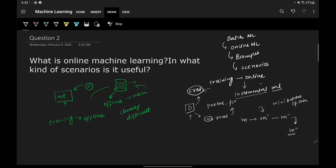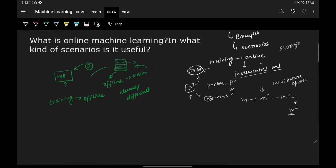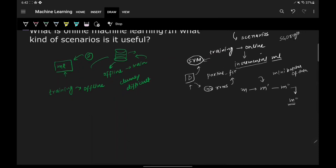You provide mini-batches of data and partially train your model — this is called incremental learning. Not every algorithm supports it, but certain algorithms like SVM or SGD Regressor do. The benefit is that you can train on very small amounts of data, and this training technique can be implemented on the go or on the server.